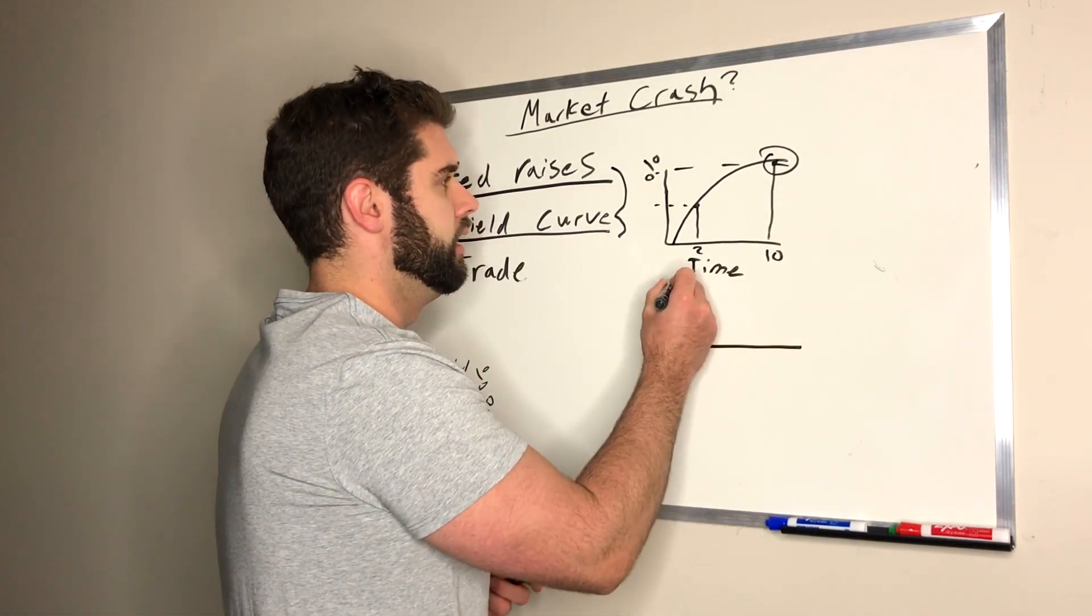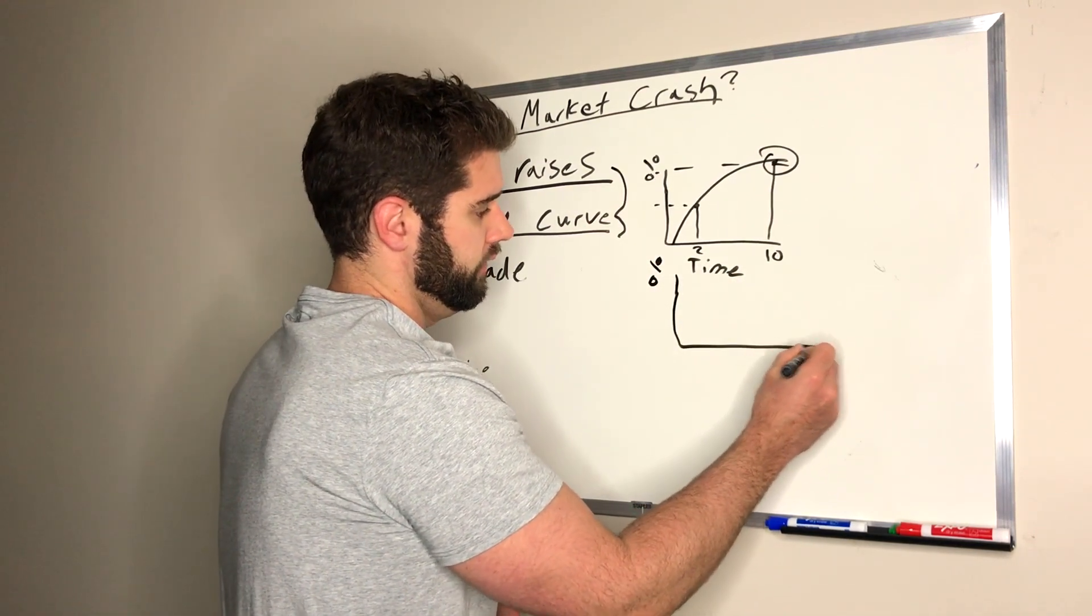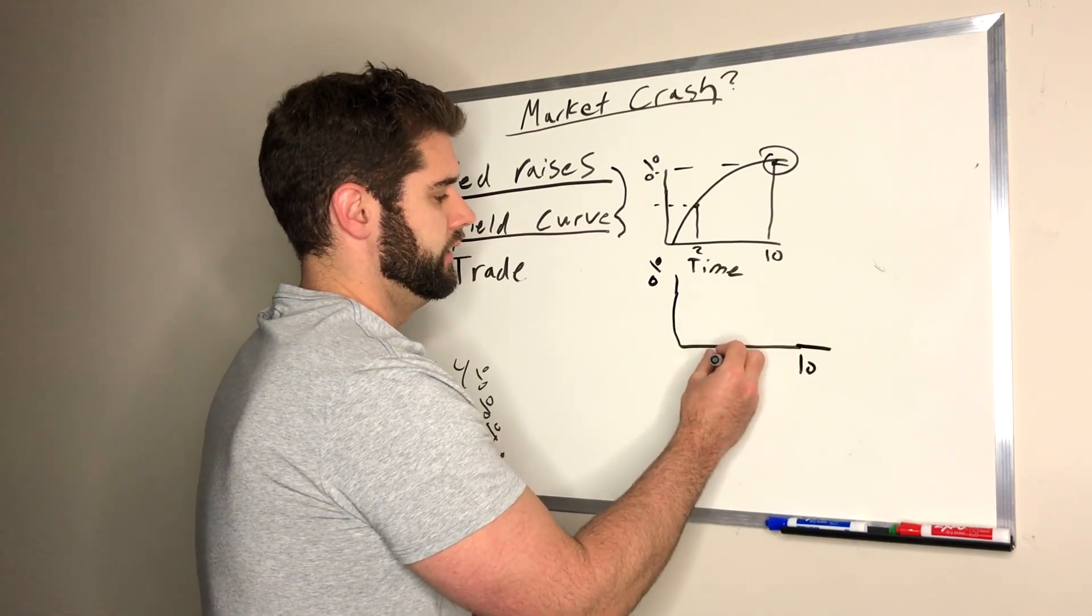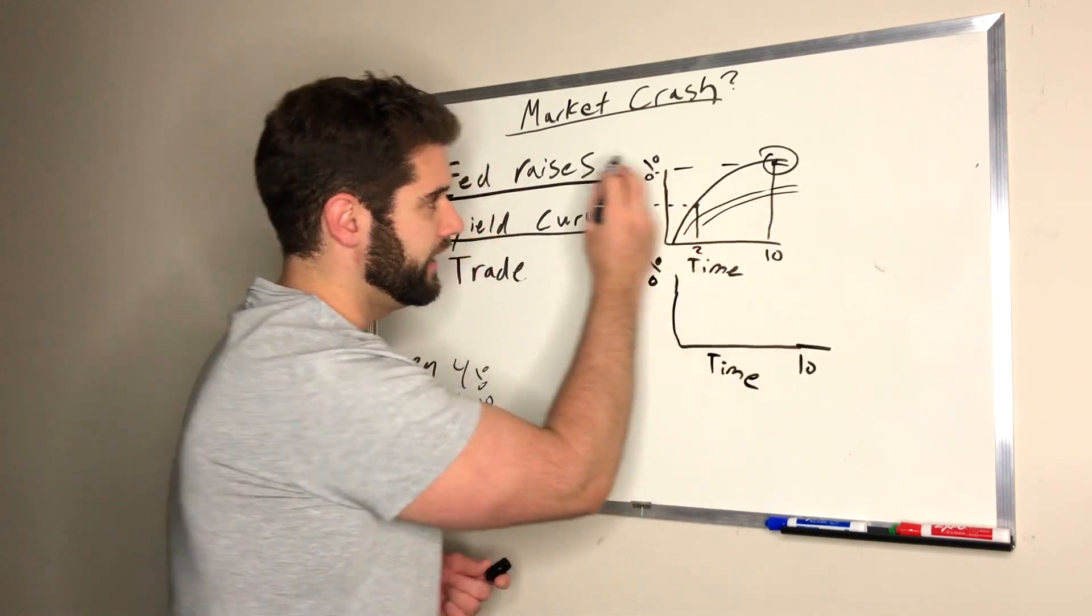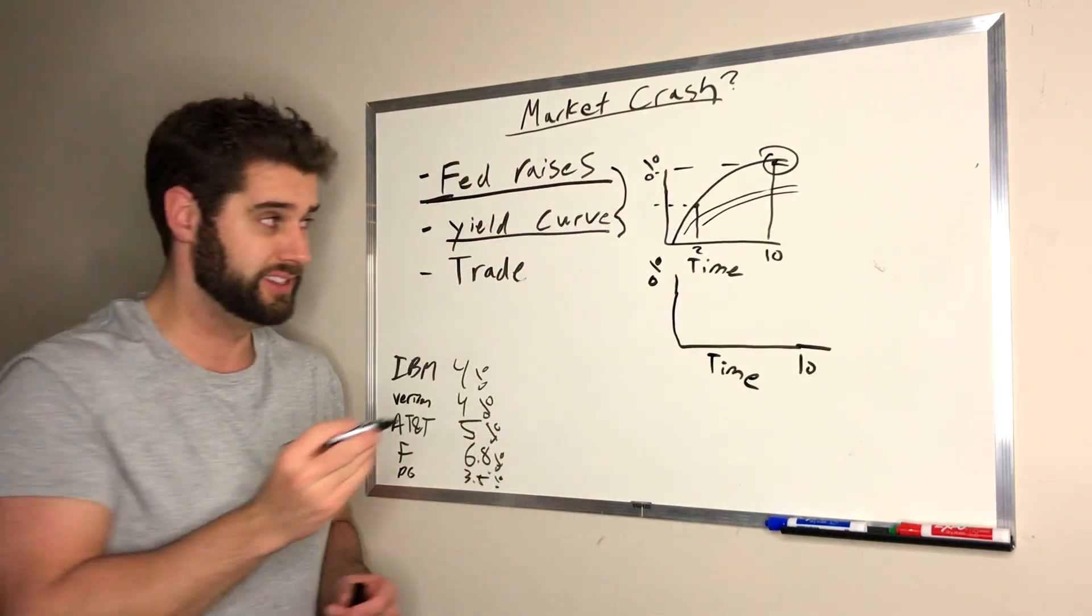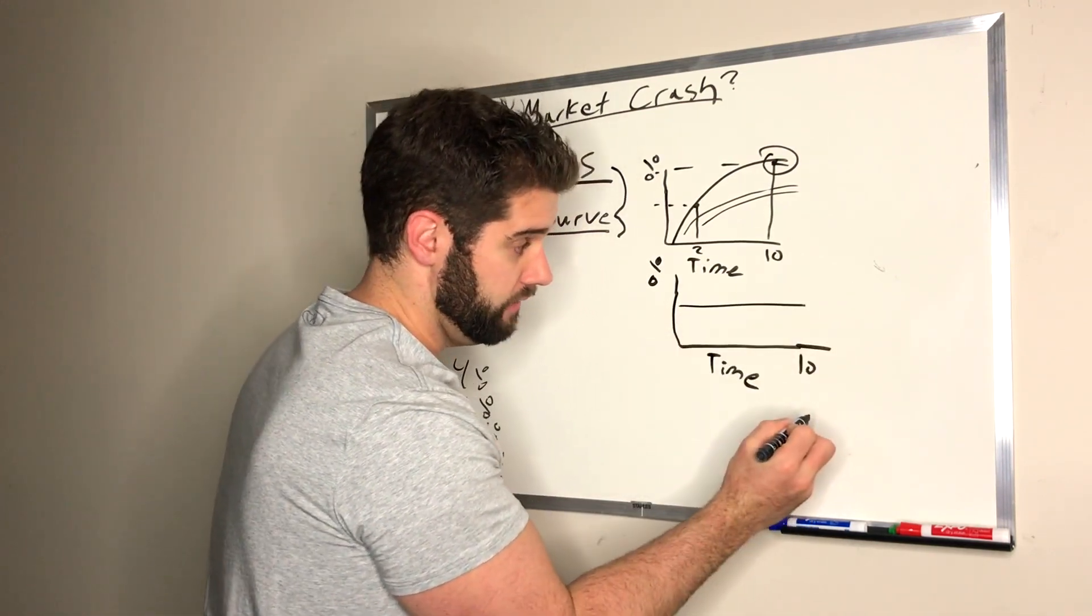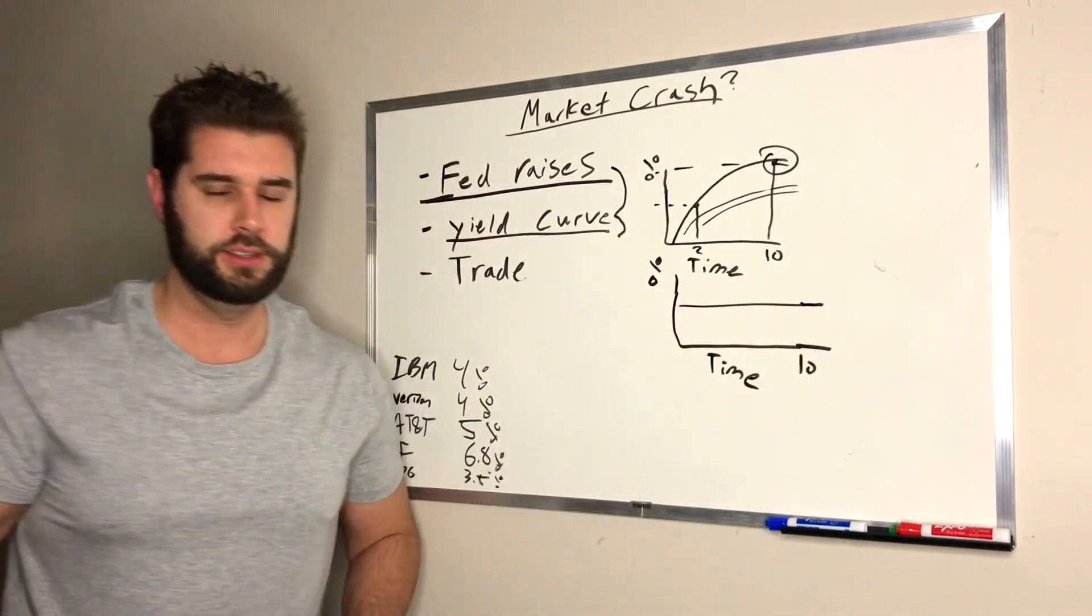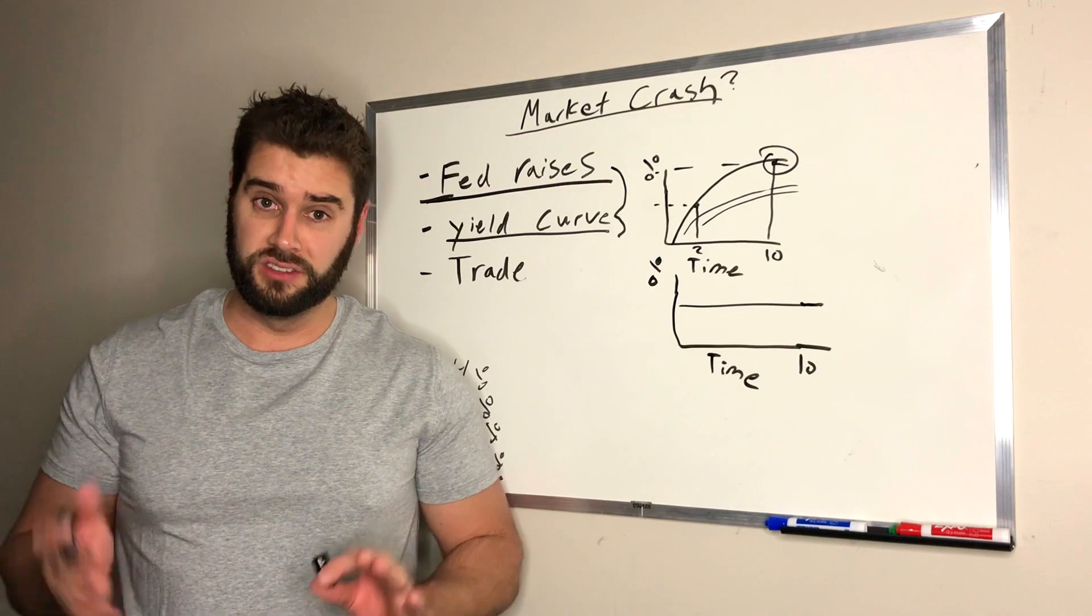So quite often now you're hearing flattening. Let's put it down here. Flattening of the yield curve. So this is concerning for a lot of investors. We'll say this is 10 years again. This is percentage. And this is time. It could keep shifting. And we've seen it kind of shifting. And that's what's been spooking the market right now, what we've been seeing, right? It's still not flat. But the concern is that it might go flat or it might even go inverted.